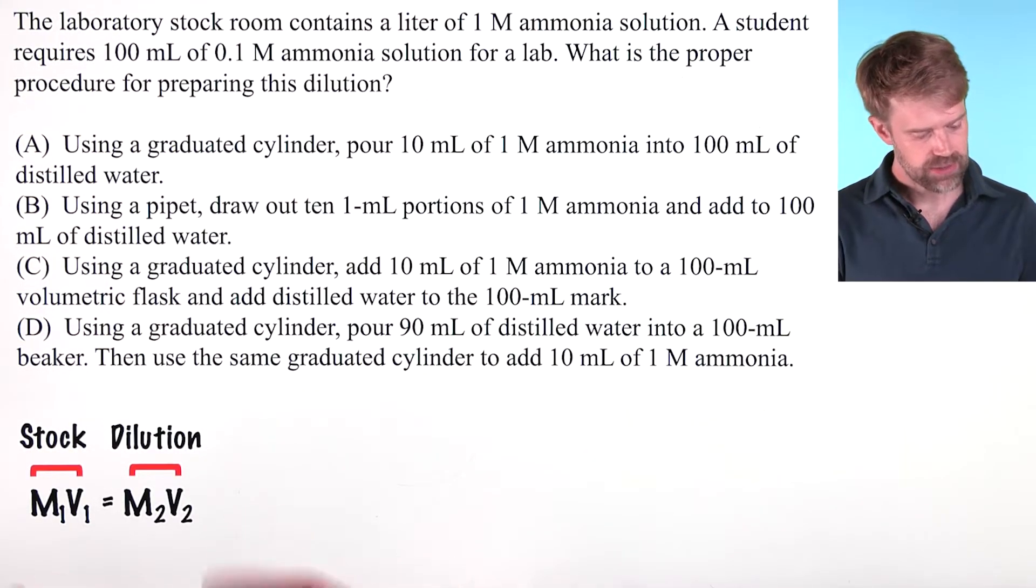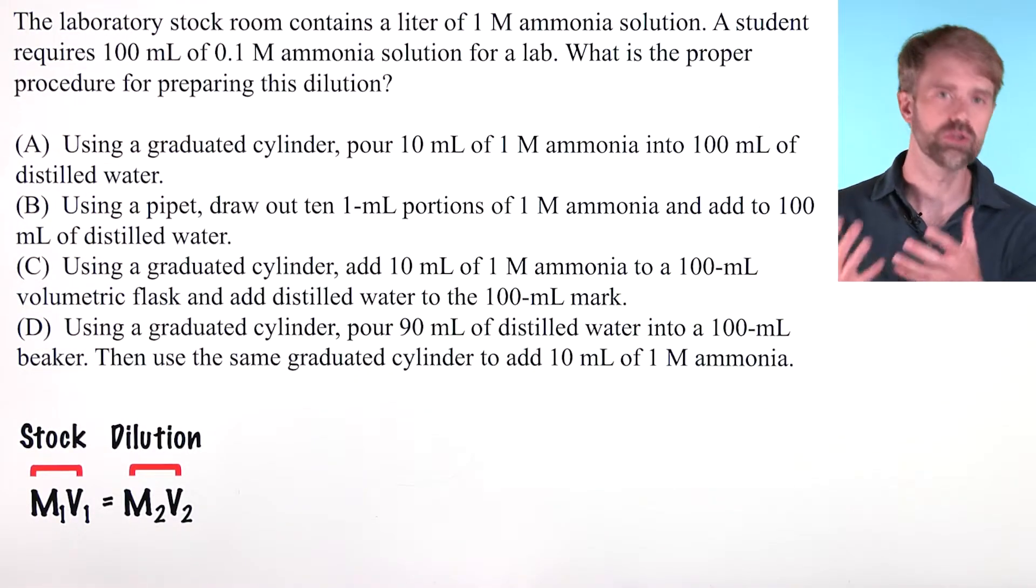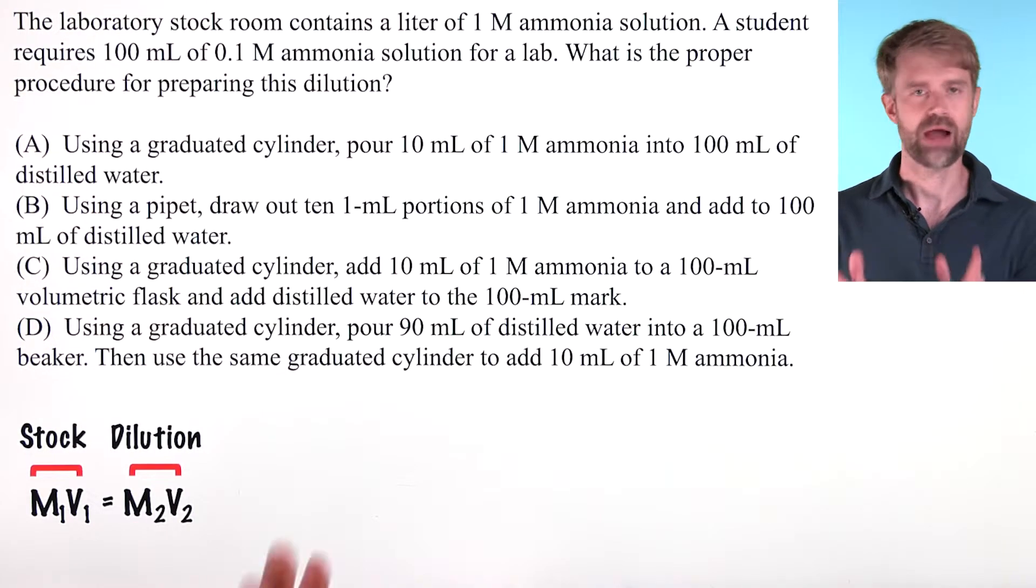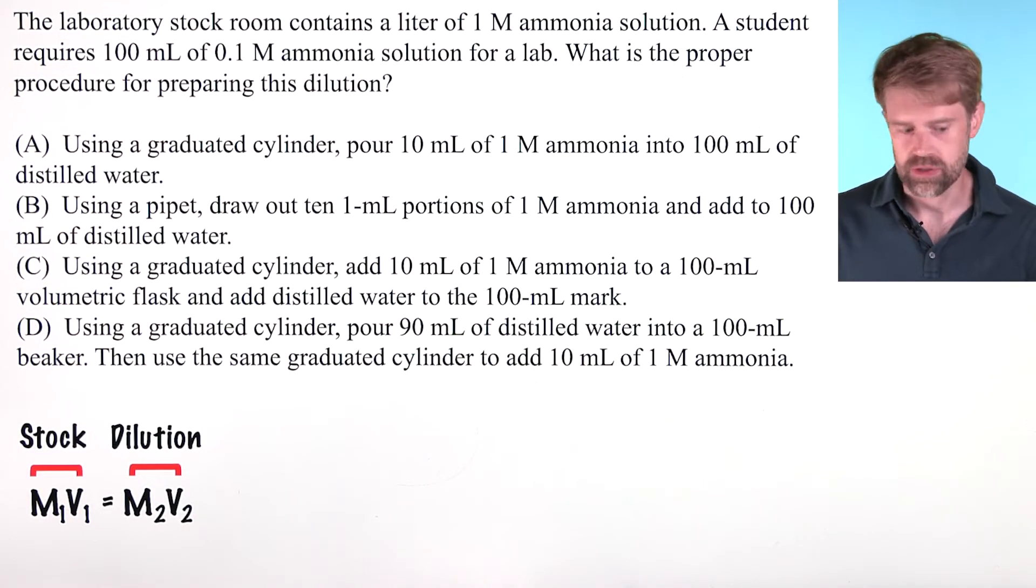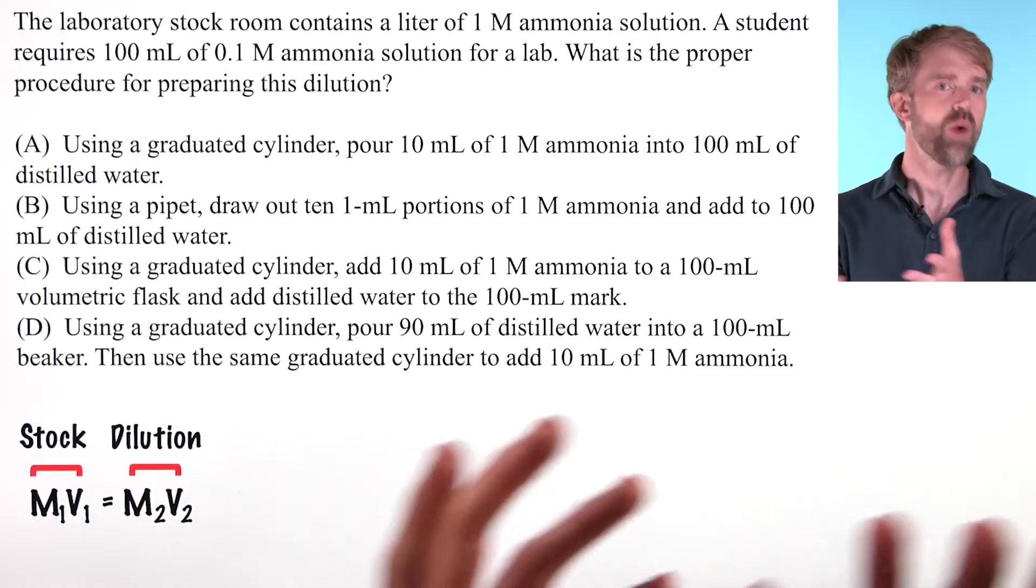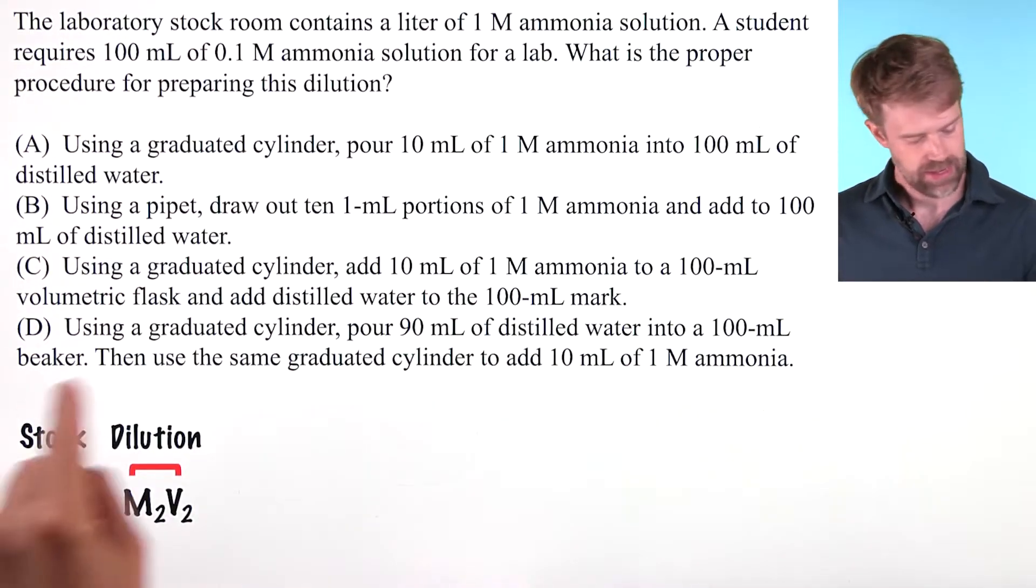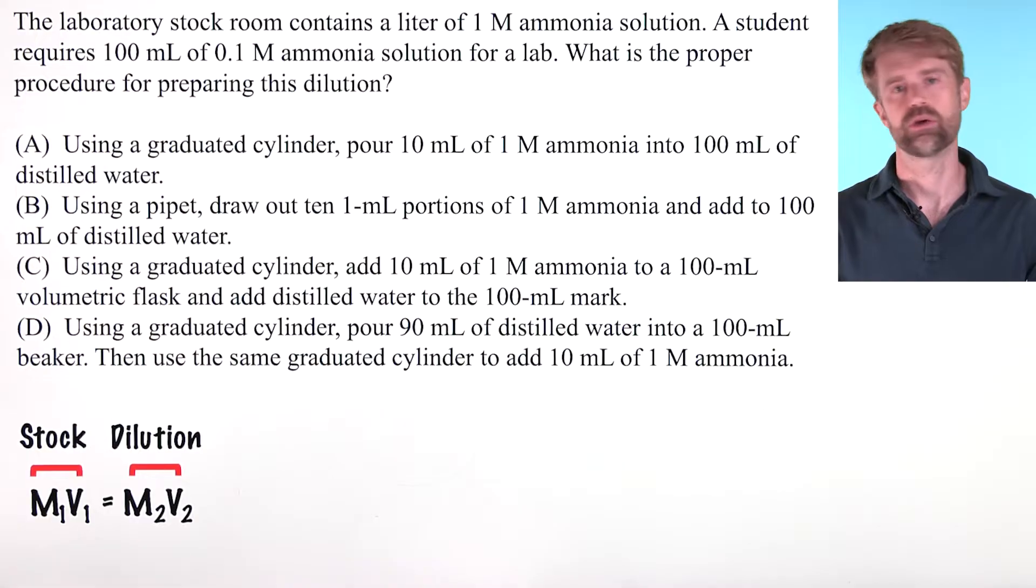The equation for making a dilution is M1 times V1 equals M2 times V2. M1 and V1 are the stock solution molarity and volume, and M2 and V2 are the dilution molarity and volume. Now, this equation isn't given to you on the AP equation sheet, so it's a good idea to have it memorized going in. Honestly, you're going to use it over and over in all of your chemistry classes moving forward.